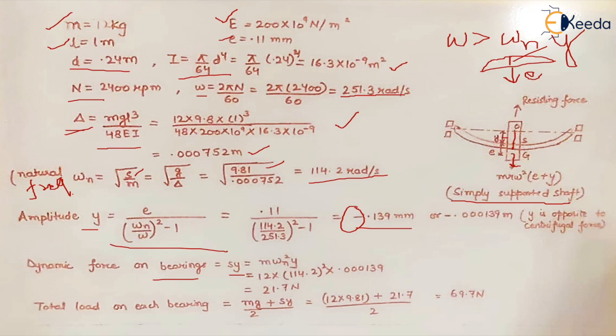From here we can find the formula that S = m × ωn². We know the value of mass of the rotor and we know ωn, so we place the values and this is what we get: Sy.